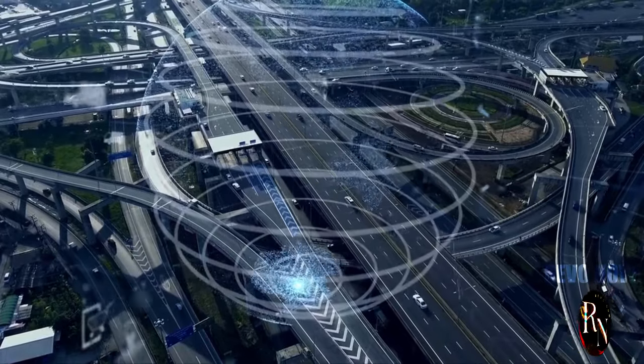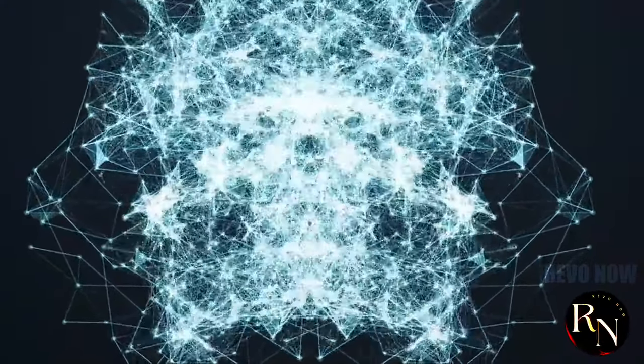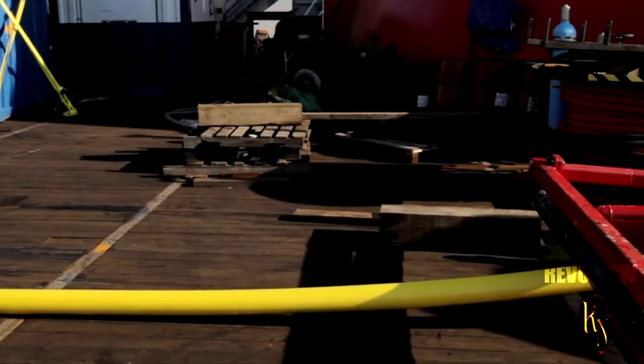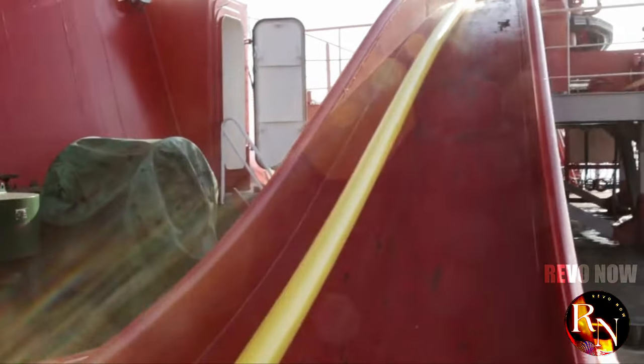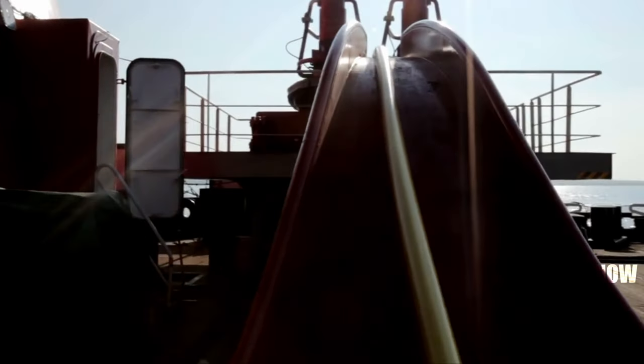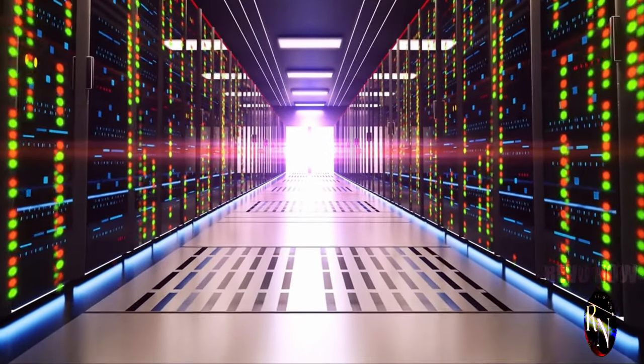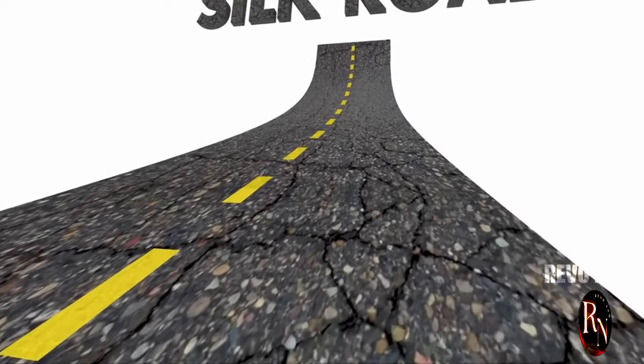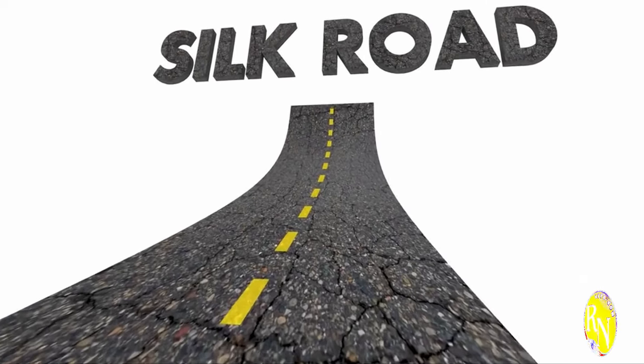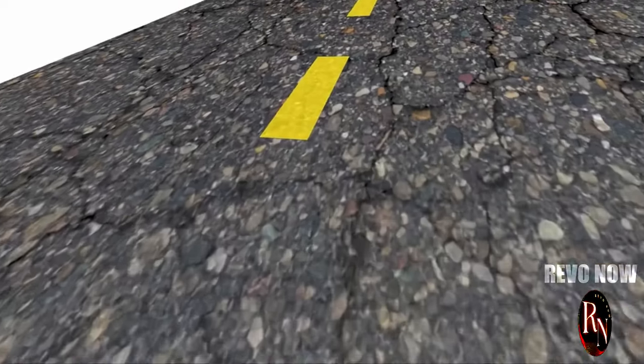Imagine the internet as a vast highway system. Websites, emails and videos are the vehicles traversing this network. Now picture undersea cables as the superhighways beneath the ocean, carrying over 99% of all international data traffic. Control over these cables translates to control over the flow of information, a reality not lost on China. Enter China's Digital Silk Road, an ambitious project to lay thousands of miles of undersea cables connecting Asia, Africa, Europe and even South America.